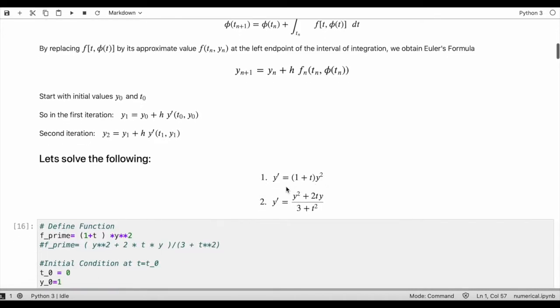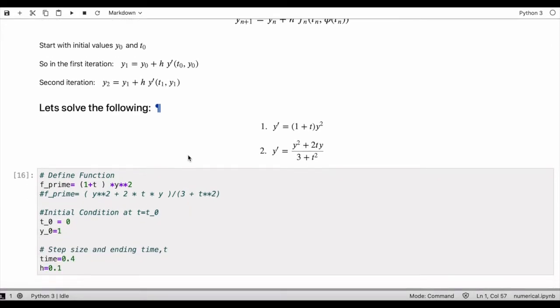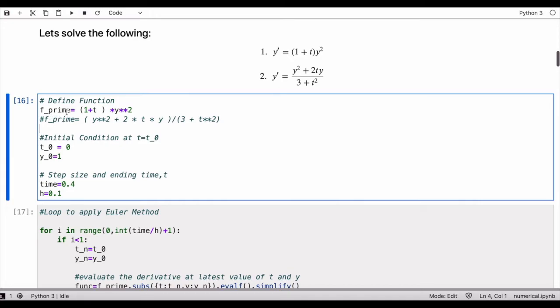Now let's solve the following two problems and see how we can do it in Python very easily. I'll start with the easier one where y' is equals to 1 plus t times y squared. I'll just define the function at first, so let's give it a name f' equals 1 plus t times y squared.